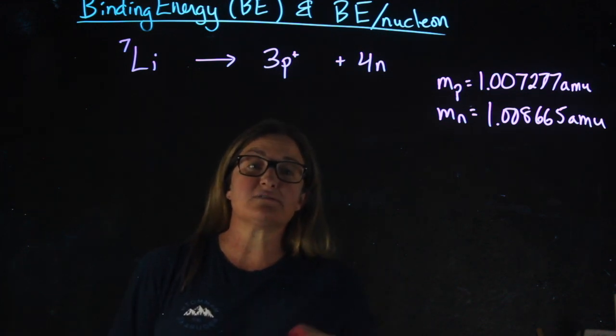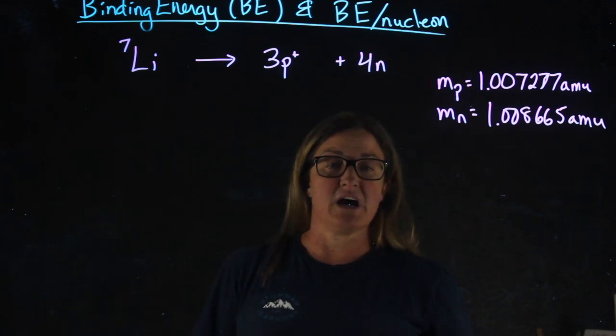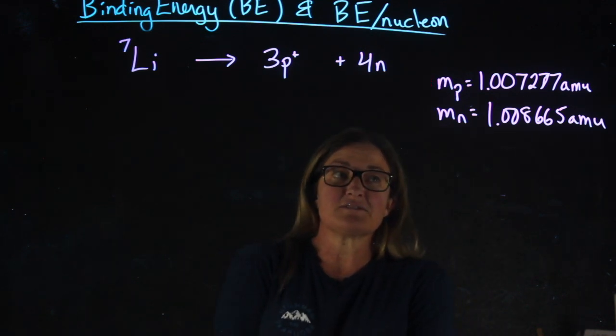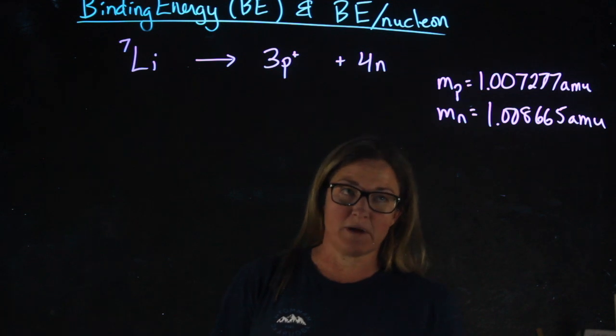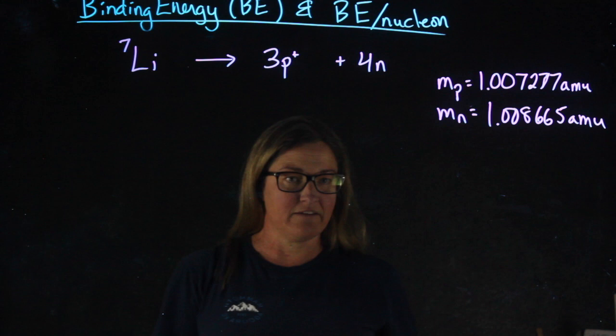In order to do this, we need to use very precise masses. We're going to use, for the mass of a proton, 1.007277 atomic mass units, and for the mass of a neutron, 1.008665 amu.